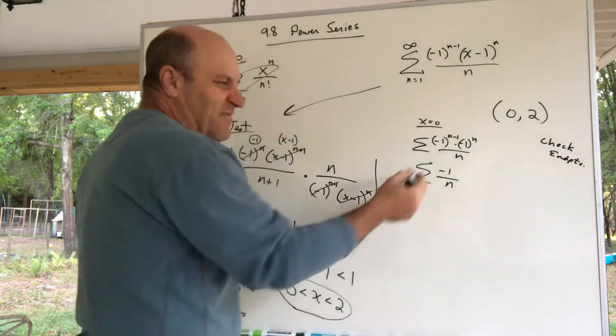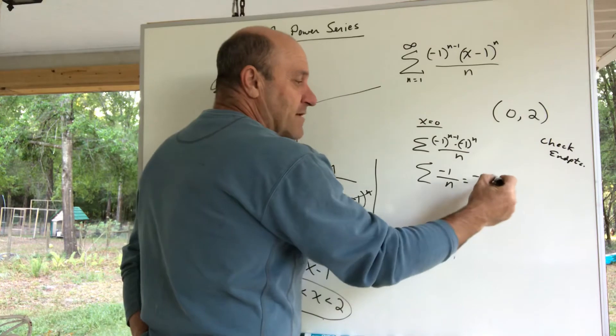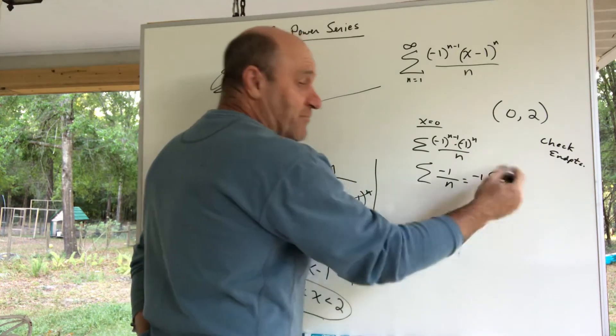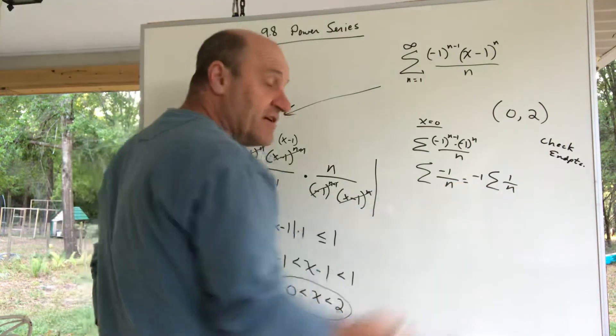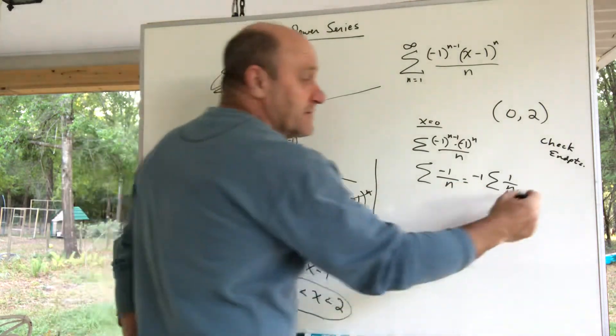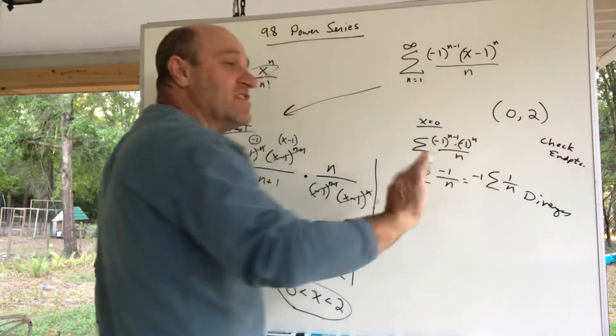Now if you take out the negative 1, it's negative 1 times 1 over n. That's a pretty famous series—that's called the harmonic series. It's a p-series, and it diverges. And therefore, at 0, it does not converge. At 0 it diverges, so I'm not going to include the 0.